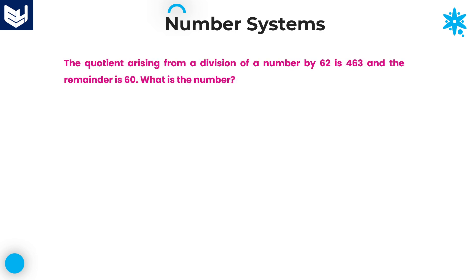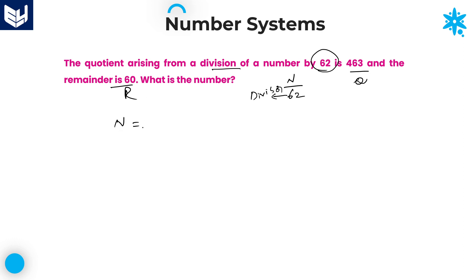Next question. The quotient arising from a division of a number by 62 is 463. So many students will confuse at this point. You are getting a quotient by division of a number by 62. Here, 62 is called as divisor, N is called as dividend, and the remainder is given as 60. What is that number?